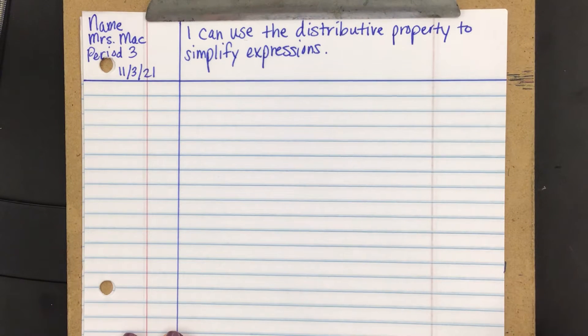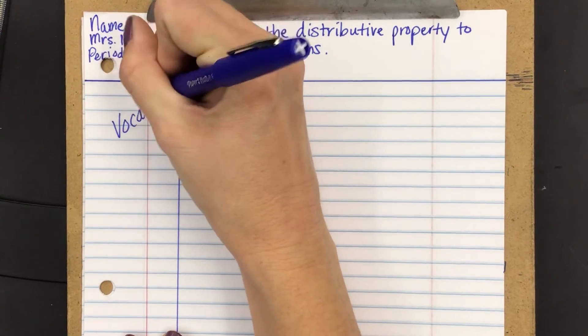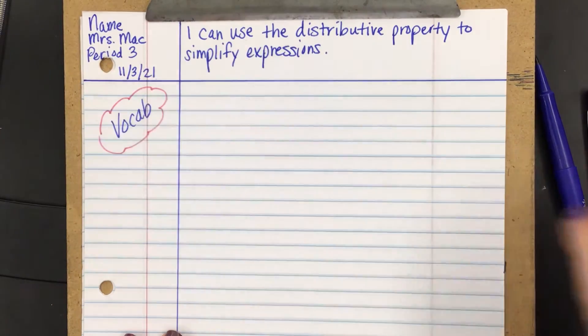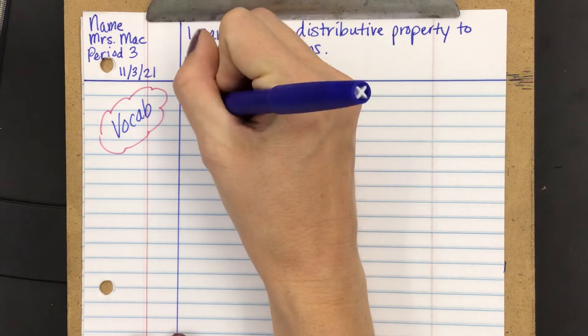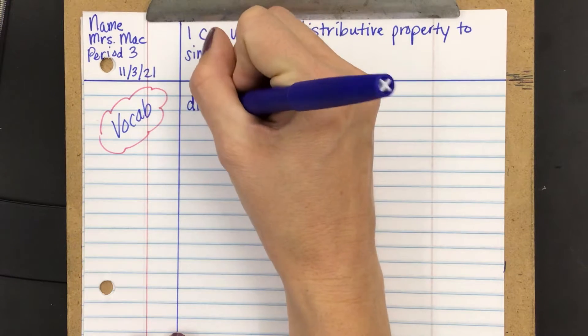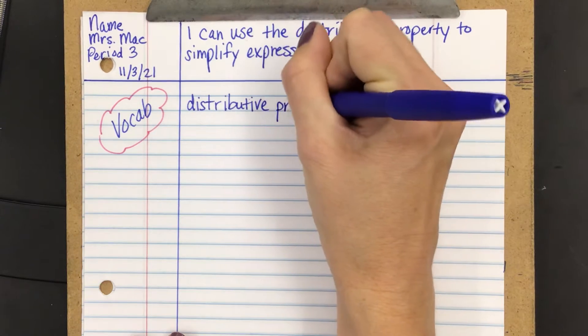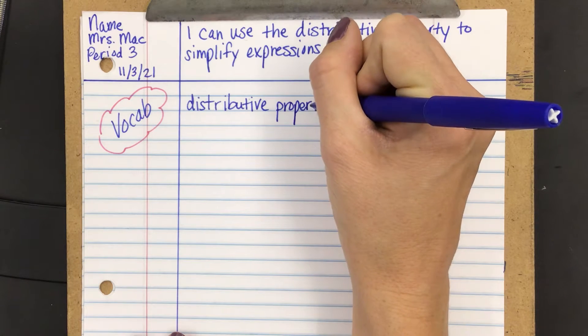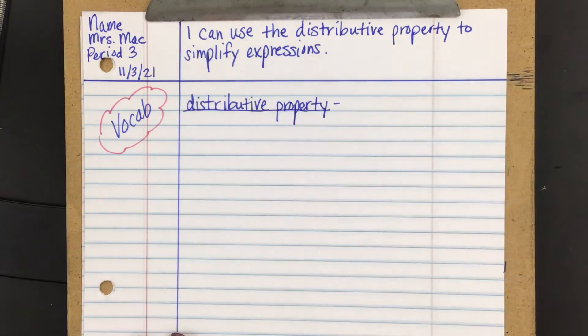So let's first talk about what the distributive property is. I know that you've seen this before, but this might be your first time seeing it with variables. So we're going to write the definition of the distributive property down here, and then we're going to apply it first to just numerical expressions, and then we'll dive into algebraic expressions.